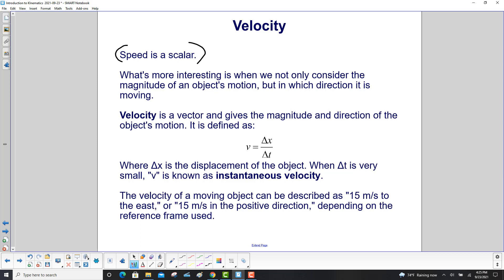Speed is a scalar. What's more interesting is when we not only consider the magnitude of an object's motion, but in which direction it's moving. That's going to be velocity. Velocity is a vector, and it gives the magnitude and direction of the object's motion. It is defined as V equals delta X over delta T, where delta X is the displacement of the object, not the distance anymore. When delta T gets very small, V is known as the instantaneous velocity. The velocity of a moving object can be described as fifteen meters per second to the east, or fifteen meters per second in the positive direction, depending on the reference frame used. See, we're giving it a direction here, and you have to define what kind of directions you want to talk about.